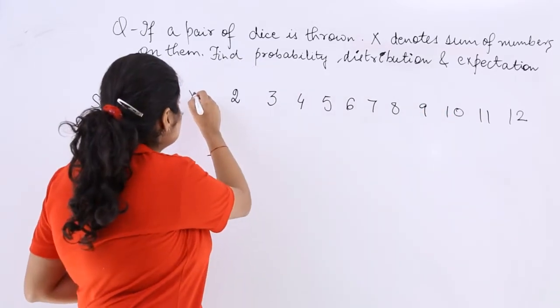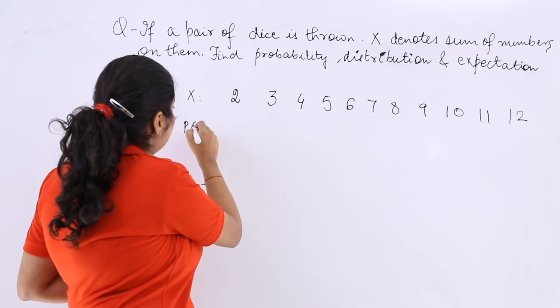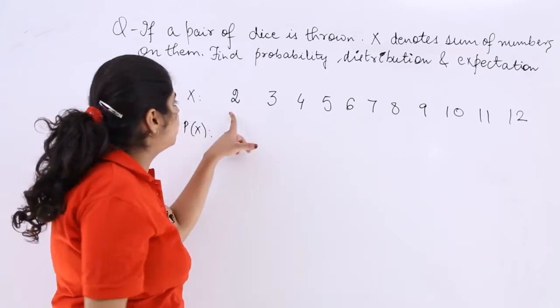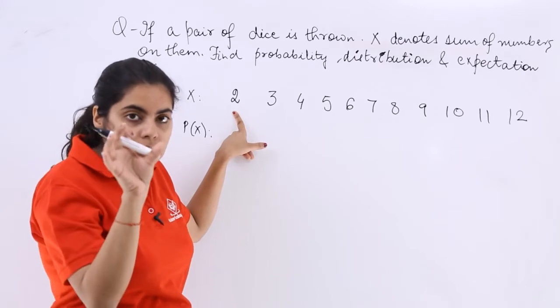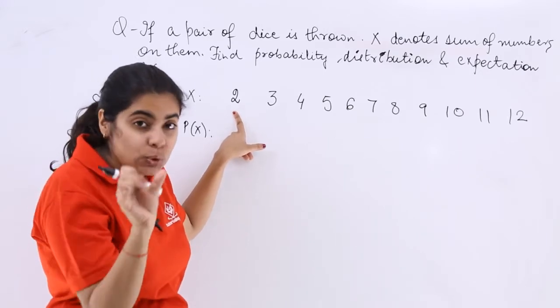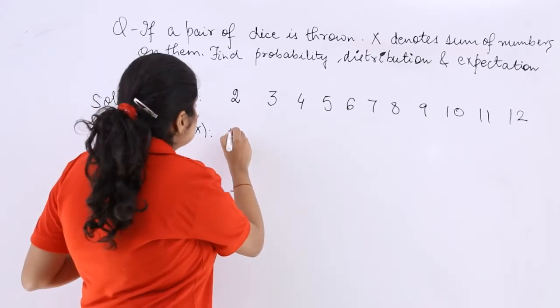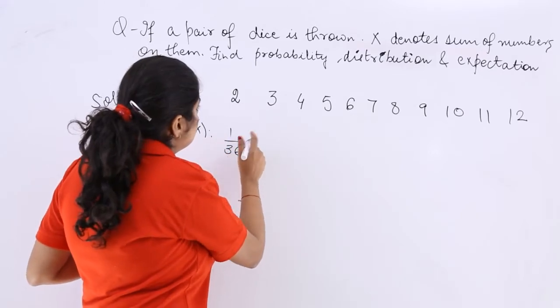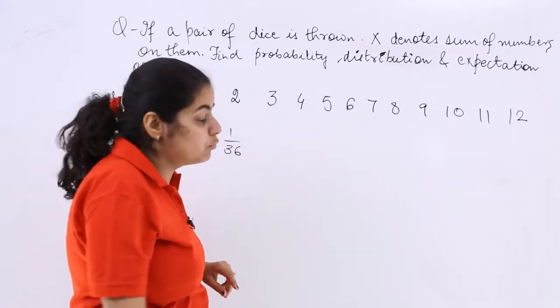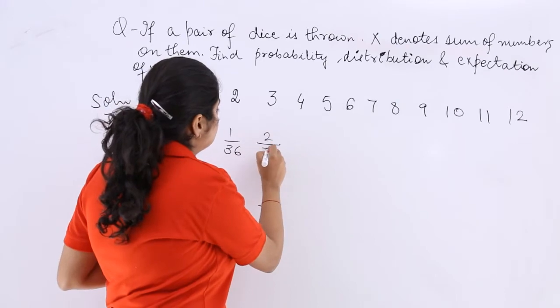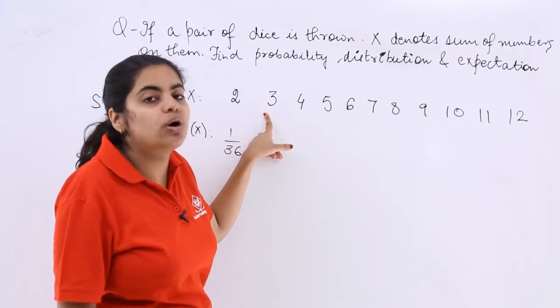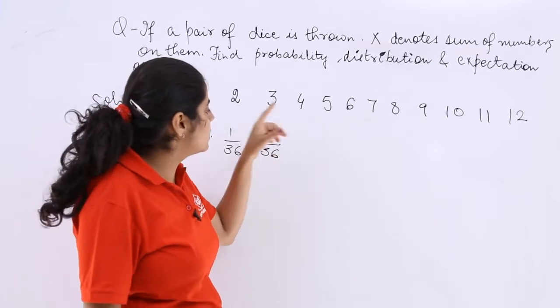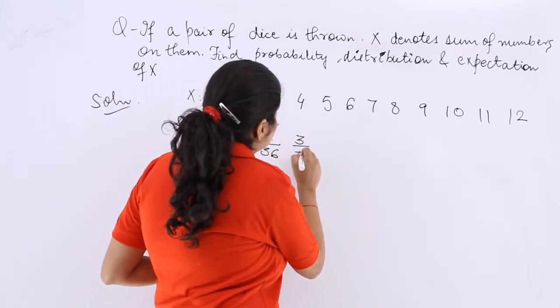And what is the probability? So if this is your X, this should be your P of X. So the probability of getting a 2 on 1, 1 on both the dice or 2 as the sum would be 1 over 36. Getting 3 would be 2 over 36 because there are 2 cases: 1 on the first die, 2 on the second or vice versa. Similarly, here it would be 3 over 36.